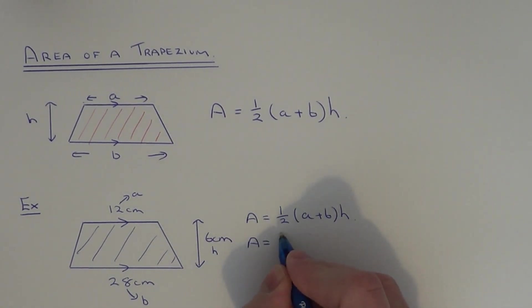We have area equals a half bracket twelve plus twenty eight close your bracket h which is six.